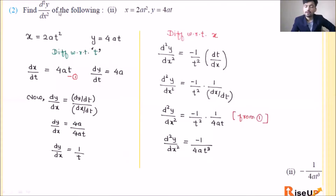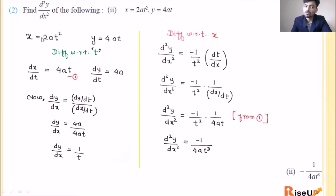Now let us look at the second question: find d²y/dx² — x equals 2at², y equals 4at. Again a parametric equation. Differentiating: dy/dt = 4a. Now find dy/dx: dy/dx = (dy/dt)/(dx/dt) = 4a/(4at). The 4a cancels, so dy/dx = 1/t.